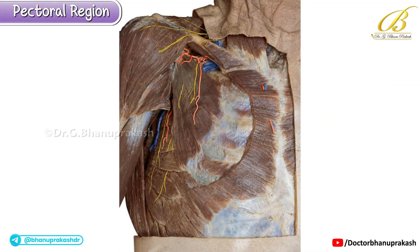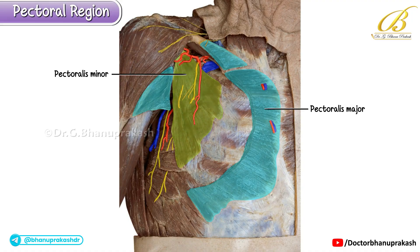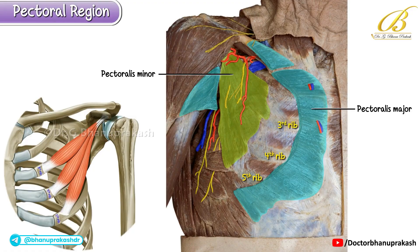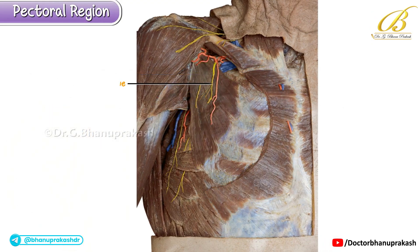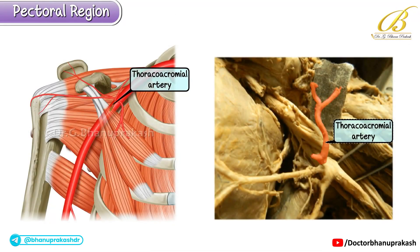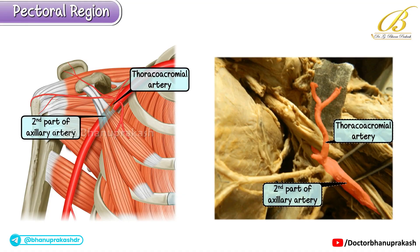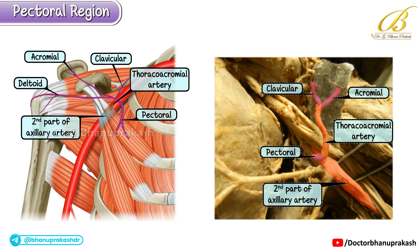This image shows the same specimen, but here a portion of the pectoralis major has been cut and reflected to expose the deeper structures beneath it — most notably the pectoralis minor. The pectoralis minor is a small triangular muscle situated deep to the pectoralis major. It takes its origin from the third, fourth, and fifth ribs near their costal cartilages, and its fibers converge upward and laterally to insert onto the coracoid process of the scapula. In this view you can also notice the lateral pectoral nerve running along with the branches of the thoracoacromial artery; both structures pierce the clavipectoral fascia to supply mainly the pectoralis major. The thoracoacromial artery, which arises from the second part of the axillary artery, typically divides into four branches: clavicular, acromial, pectoral, and deltoid.